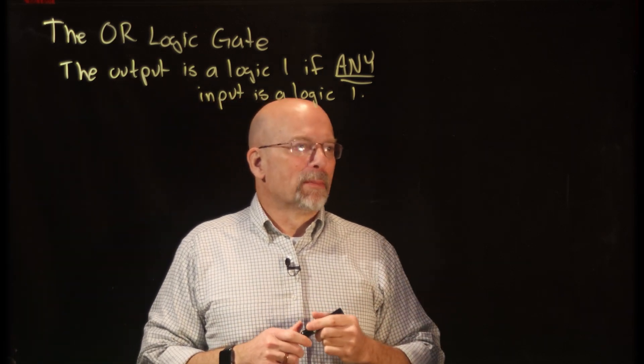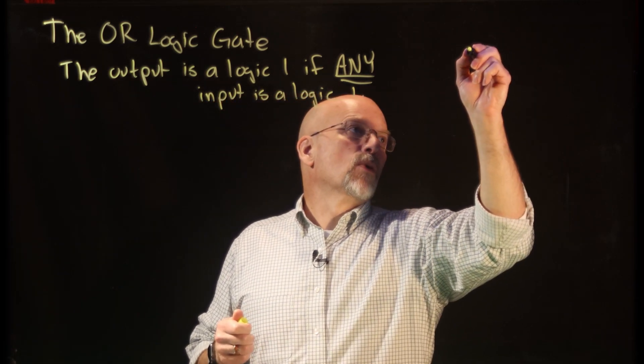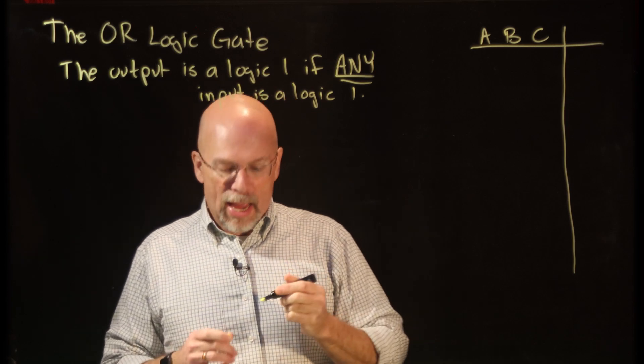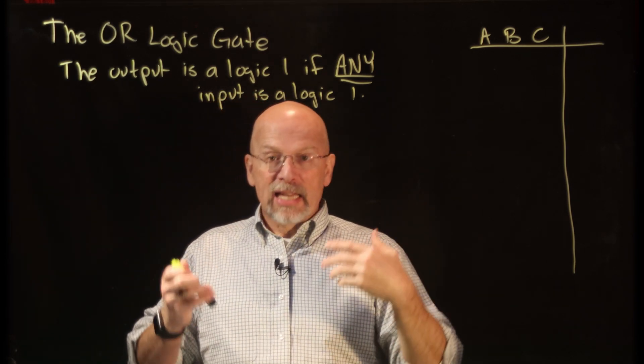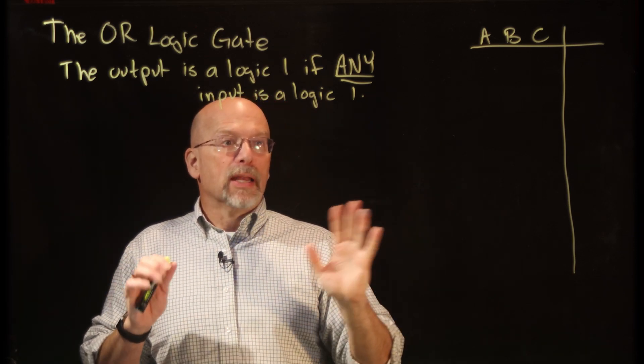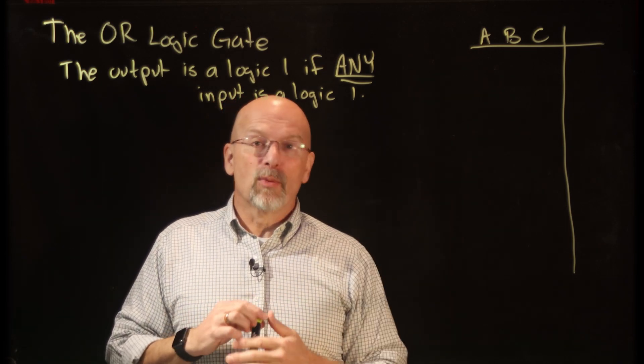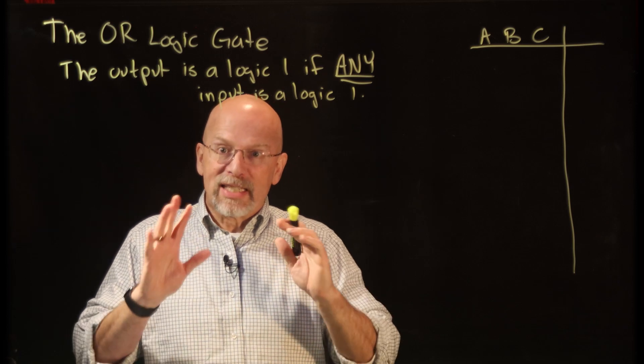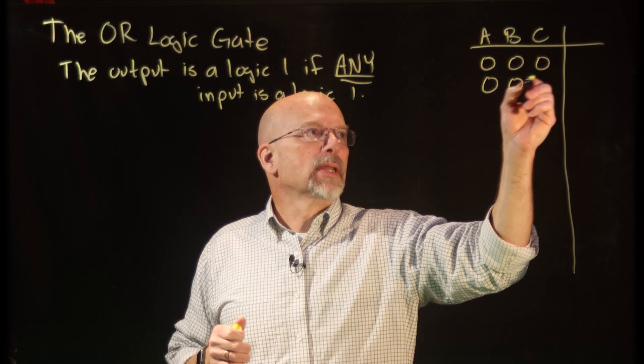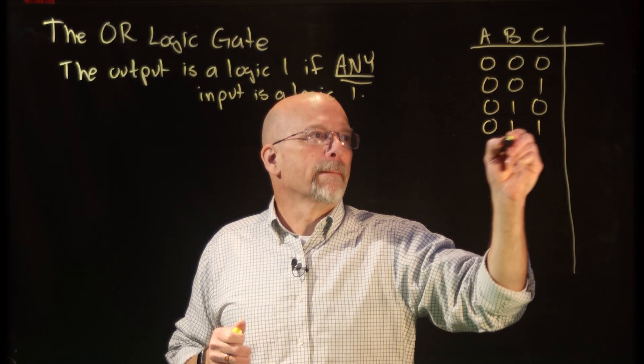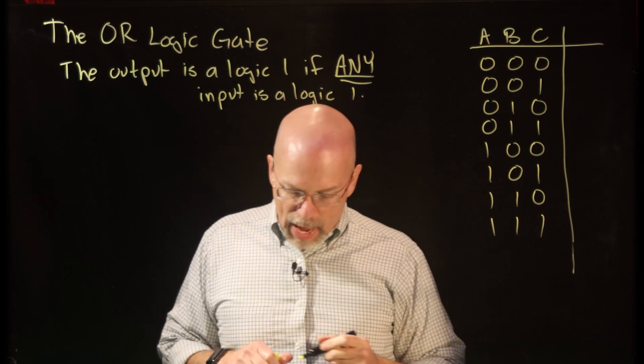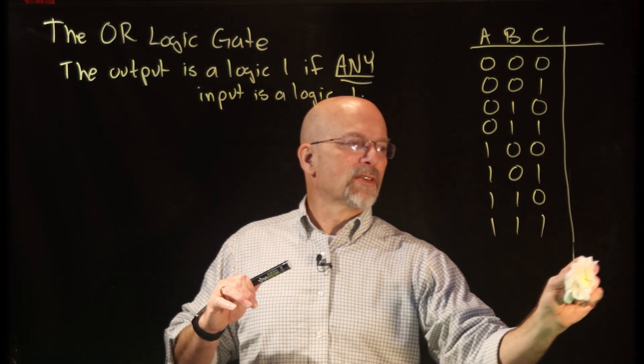So we did a truth table for the AND gate. Let's go ahead and do a truth table for the OR gate. We're going to use three inputs, A, B, and C. And once again, mathematicians tend to represent these logic functions with two inputs with an operator. But in electronics, we can actually represent multiple inputs into a single gate. So I've got three inputs here, which give me eight possible combinations of ones and zeros at the input. There's all eight of them.